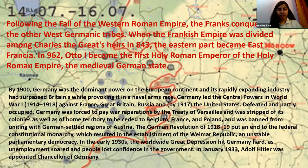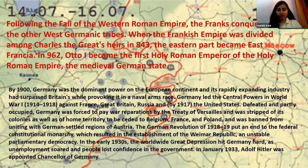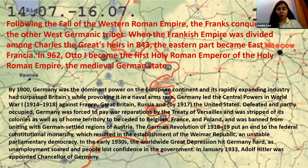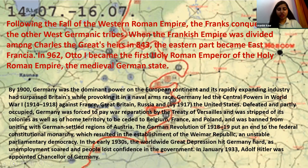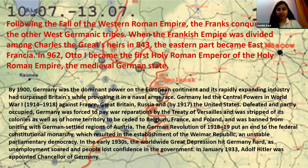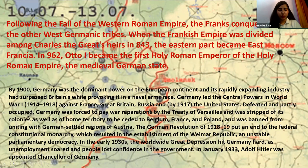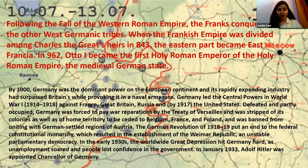The German Revolution of 1918 to 1919 put an end to the federal constitutional monarchy, which resulted in the establishment of the Weimar Republic — an unstable period where unemployment soared and people lost confidence in the government.